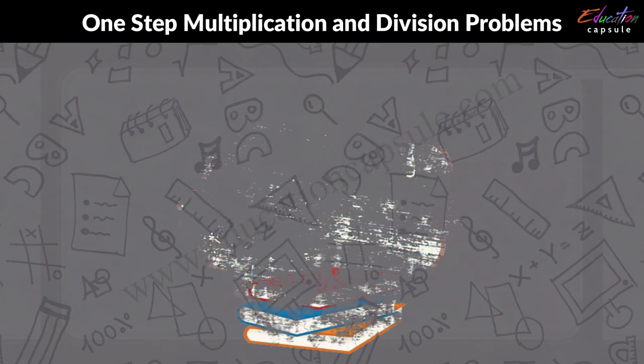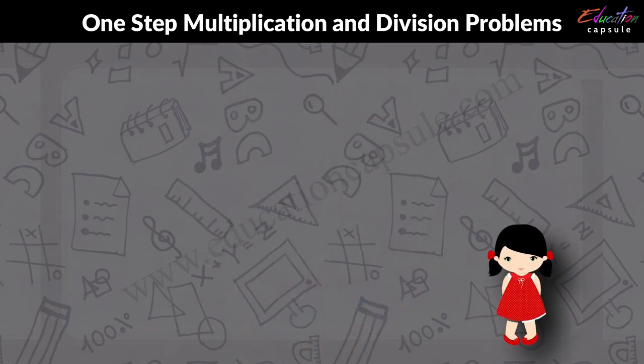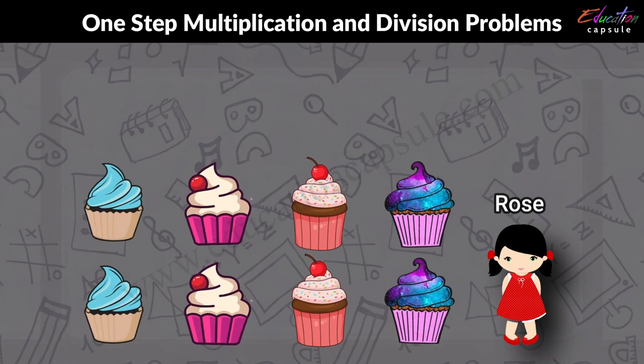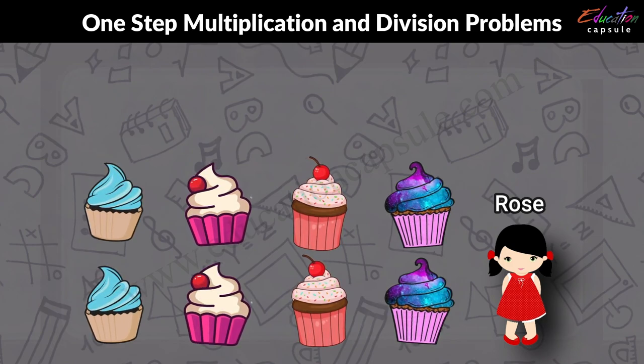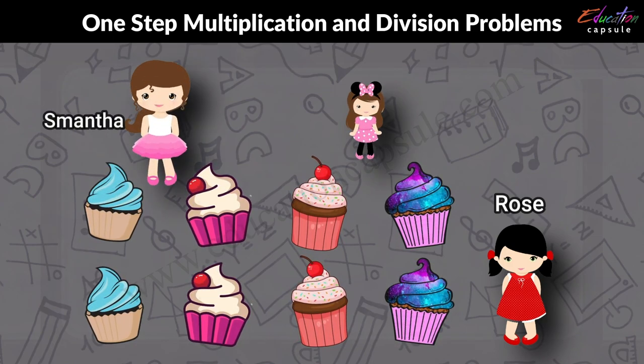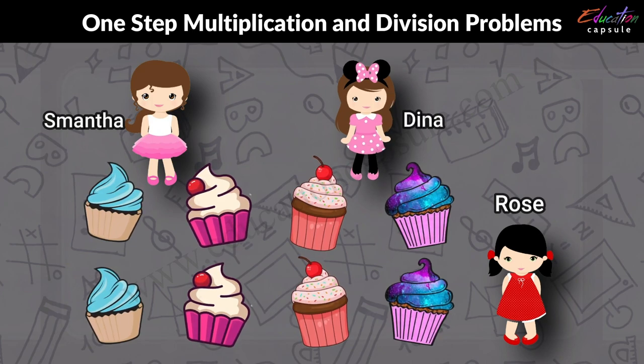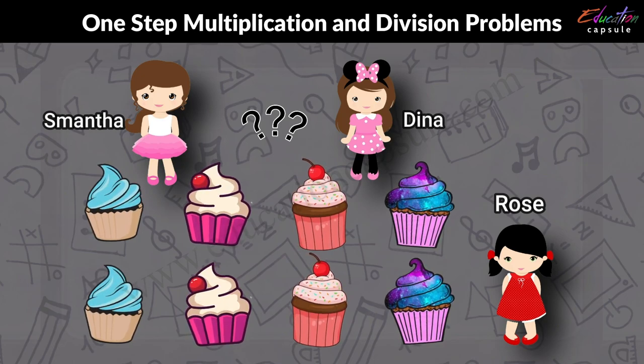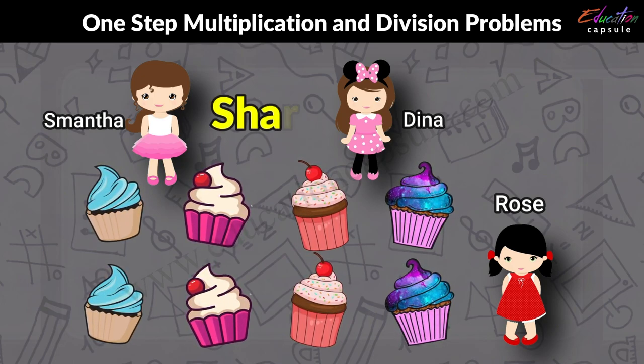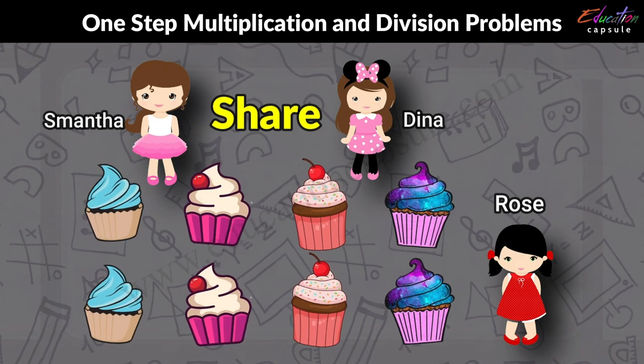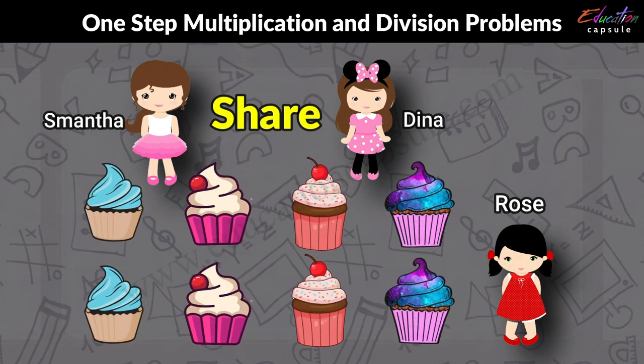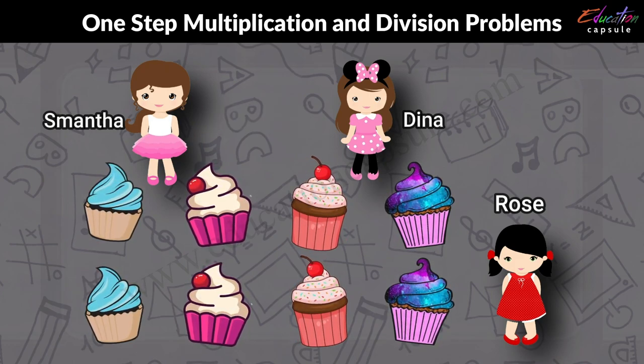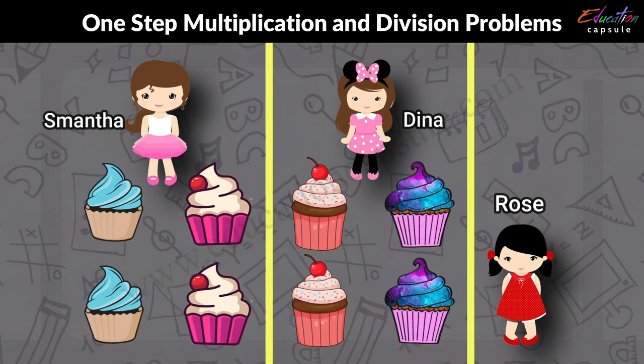Here is an example: Rose baked eight cupcakes. She decided to share them fairly between Samantha and Dina. How many cupcakes will Samantha and Dina get? Here the key word is 'share,' which gives us the clue that division is to be done. So Samantha and Dina will get four cupcakes each.